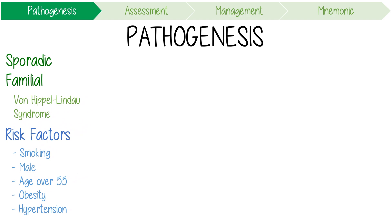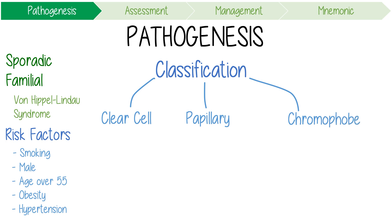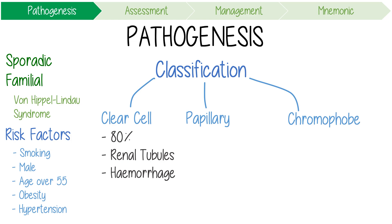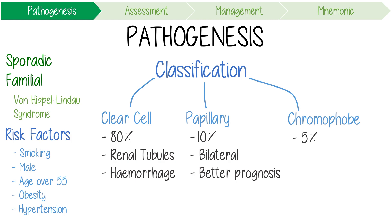Renal cell carcinoma can be classified into three main types: clear cell, papillary, and chromophobe. Clear cell carcinoma is the most common form, accounting for 80% of cancers, and originates in the renal tubules. It's often associated with hemorrhage or necrosis. Papillary accounts for 10% of cancers and is most commonly bilateral with a prognosis much better than clear cell carcinoma. Chromophobe tumors account for 5% of cases and usually have a relatively indolent disease course.